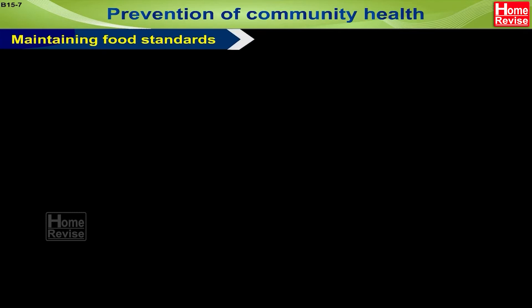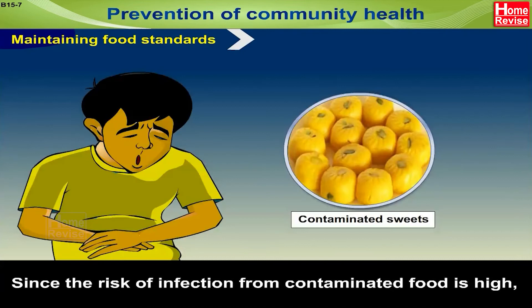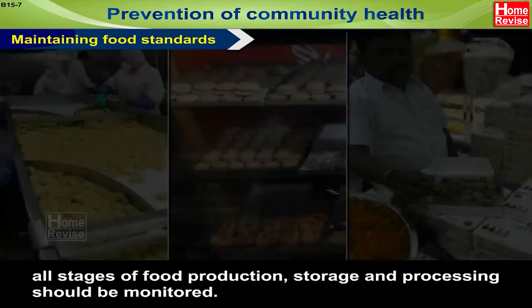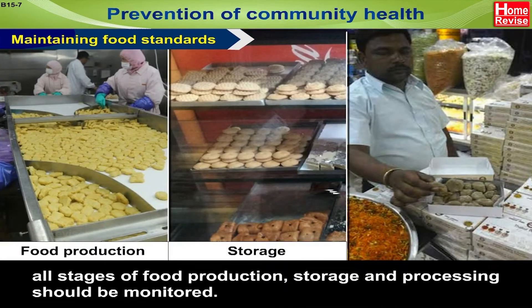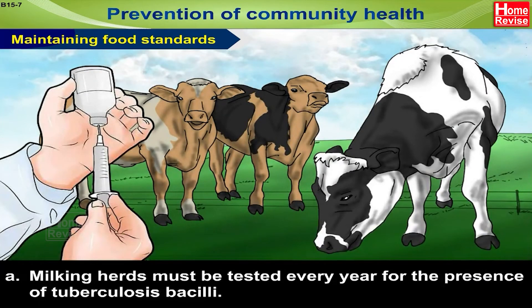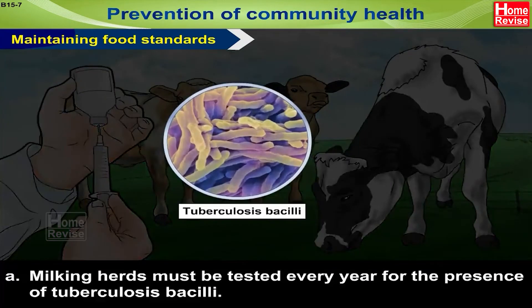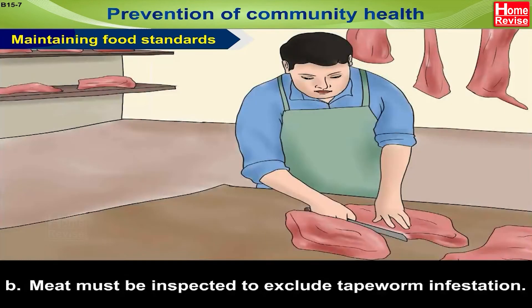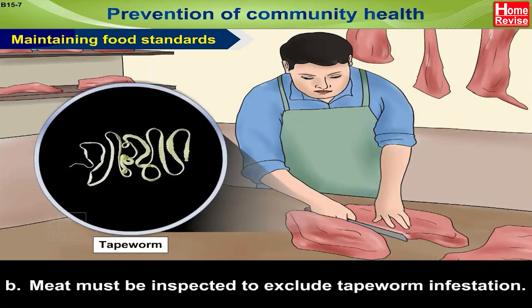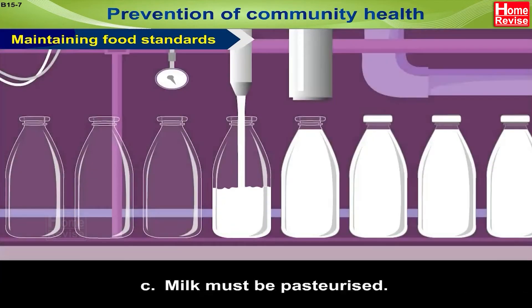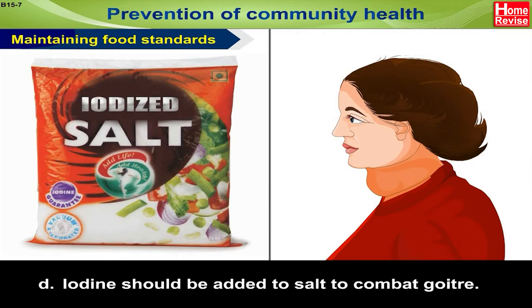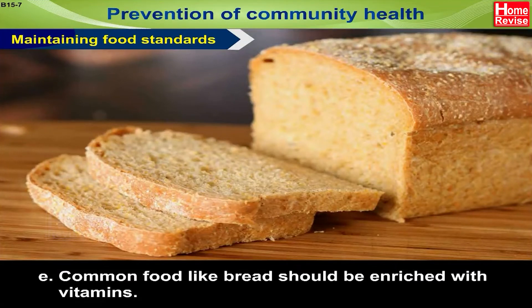Prevention of community health — maintaining food standards: since the risk of infection from contaminated food is high, all stages of food production, storage and processing should be monitored. Milking herds should be tested every year for the presence of tuberculosis bacilli; meat should be inspected to exclude tapeworm infestation; milk should be pasteurized; iodine should be added to salt to combat goiter; and common food like bread should be enriched with vitamins.